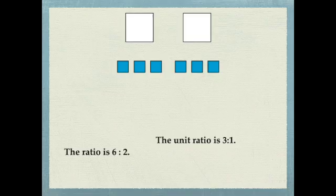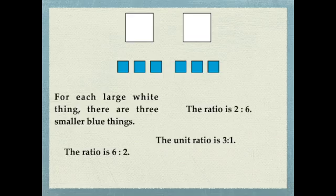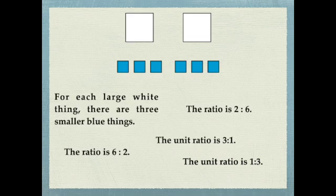Or I could just be vague. I could say for each large white thing, there are three smaller blue things. In that case, the ratio would be two to six and the unit ratio would be one to three.